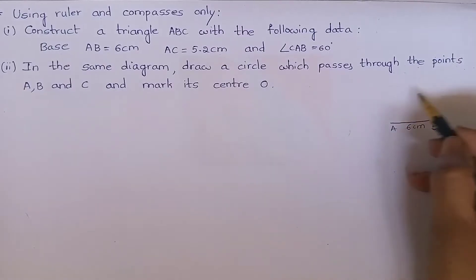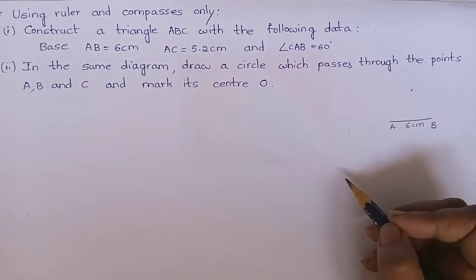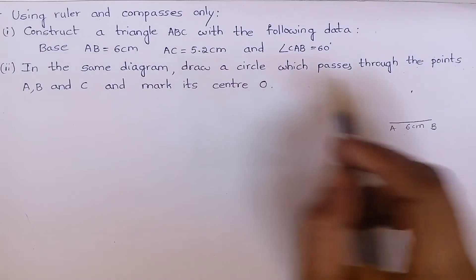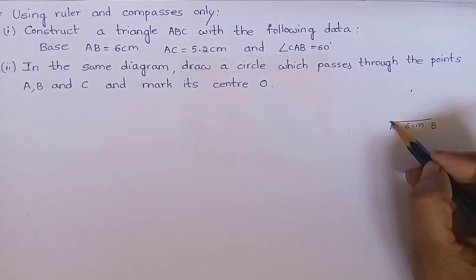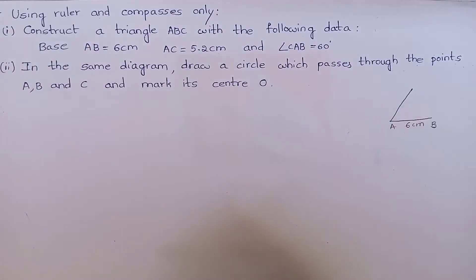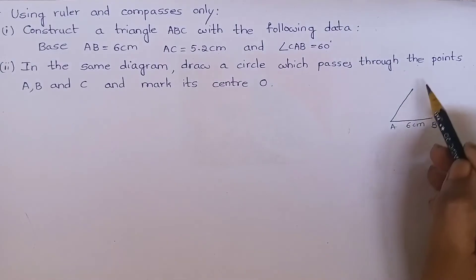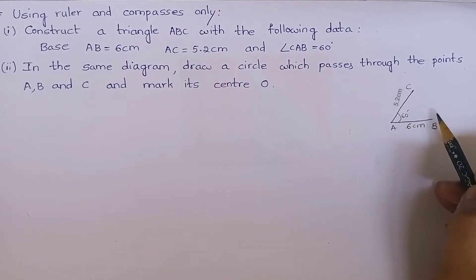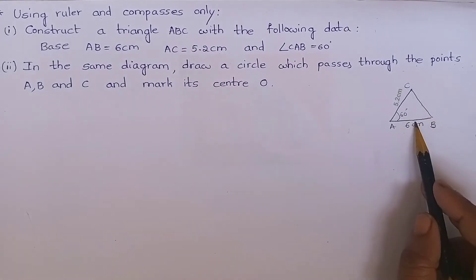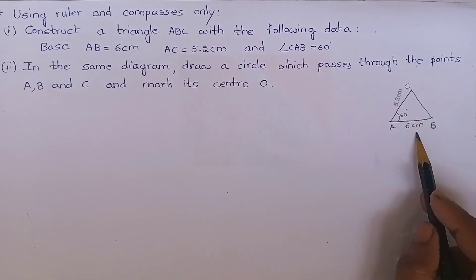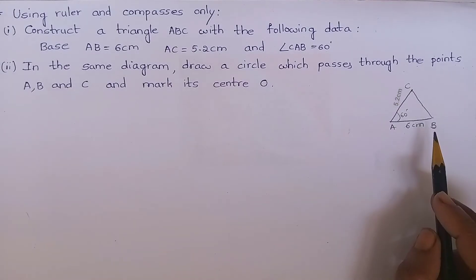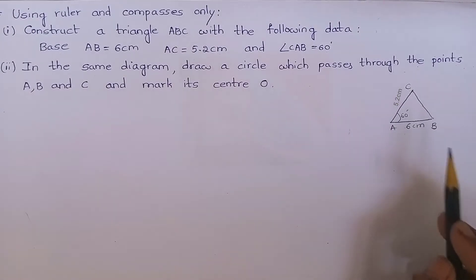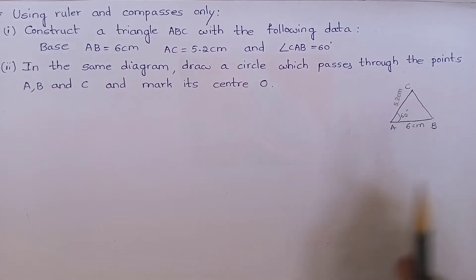Then the remaining point is C. AC is 5.2 centimeters. Then CAB is 60 degrees. With these measurements we have to construct a triangle. But remember, we have to use only ruler and compass for construction.